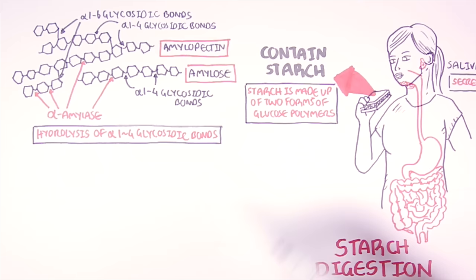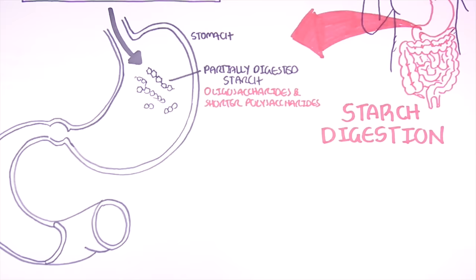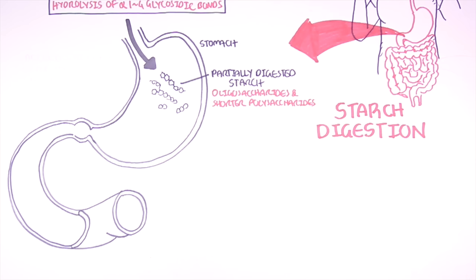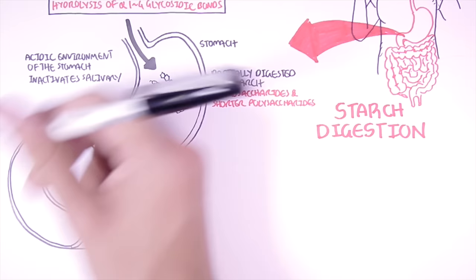Amylase will only break down the starch partially. And then from the mouth the starch will travel towards the stomach here. Starch is only partially hydrolyzed into oligosaccharides and shorter polysaccharides once it reaches the stomach. Starch is only hydrolyzed partially because once the starch comes down to the esophagus into the stomach the amylase becomes inactivated. This is because the acidic environment of the stomach actually inactivates the salivary amylase.